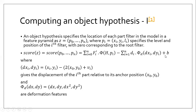The score of the hypothesis is given by the scores of each filter at their respective locations minus a deformation cost that depends on the relative position of each part with respect to the root, and a bias term. Where Phi(dx, dy) = (dx, dy, dx², dy²) gives the displacement of the i-th part relative to its anchor position, and (dxi, dyi) = (xi, yi) − 2*(x0, y0) + vi are the deformation features. If di = (0, 0, 1, 1), the deformation cost is the squared distance between the part's actual position and its anchor position relative to the root. In general, the deformation cost is an arbitrarily separable quadratic function of the displacements. The bias term is introduced to make scores of multiple models comparable when combining them in a mixture model.